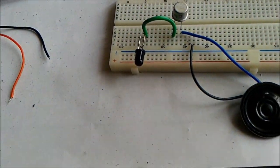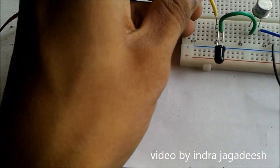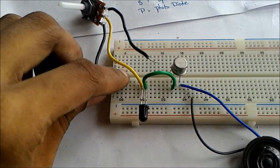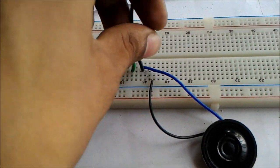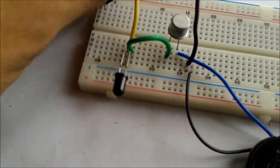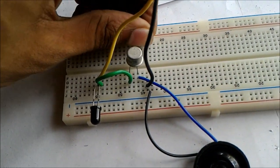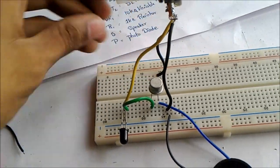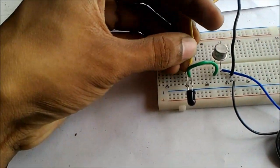Now I'm taking the 10k pot and connecting its center lead to the anode of the photodiode. One end of the pot connects to power supply and the other to ground. The emitter will be connected to ground, so I'm connecting that terminal to the emitter.